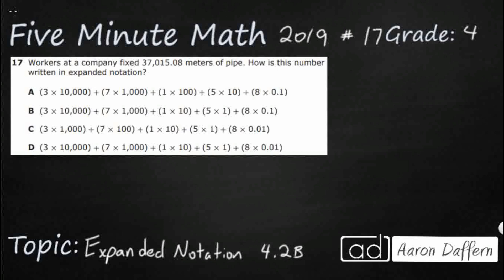If you have not done so already, please go ahead and take a moment to pause the video, work this problem out on your own, unpause it, and then we will look at our answers together. So we have workers at a company that fixed 37,015.08 meters of pipe. How is this number written in expanded notation?